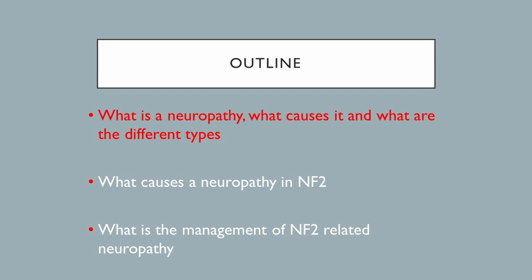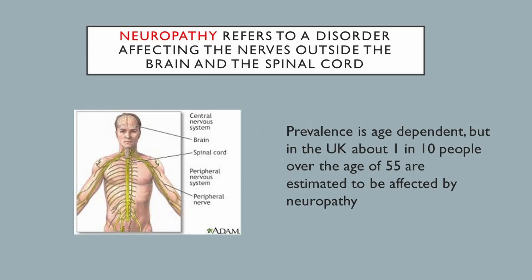The outline of the presentation covers three areas: first, a basic review of neuropathies in general — not specifically related to NF2 but what we see in the general population — covering what a neuropathy is, how to diagnose it, how to classify it, and what causes it. Then specifically neuropathies in NF2, which are different, and finally how they are treated.